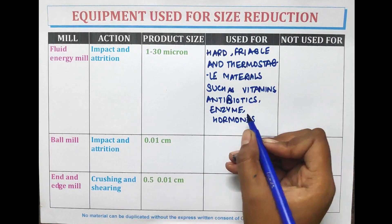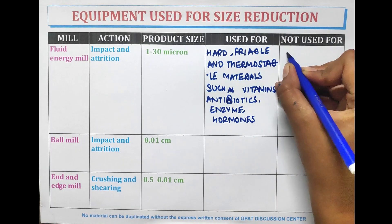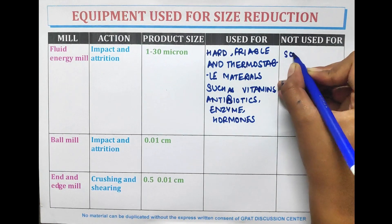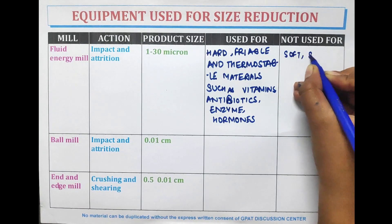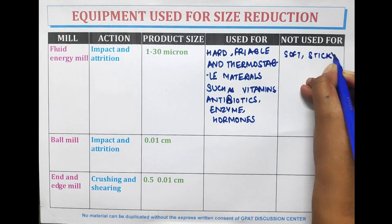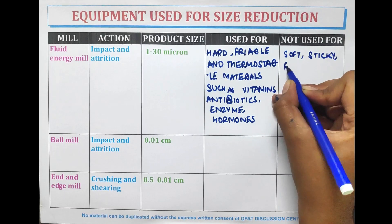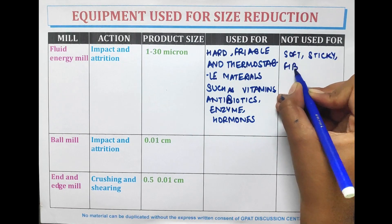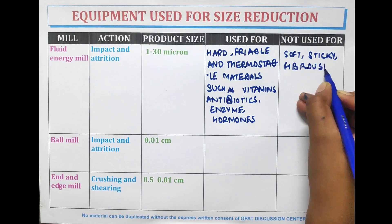The fluid energy mill is not used for soft, sticky, and fibrous materials.